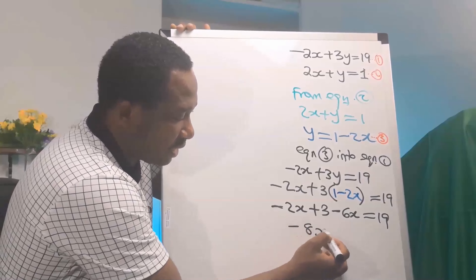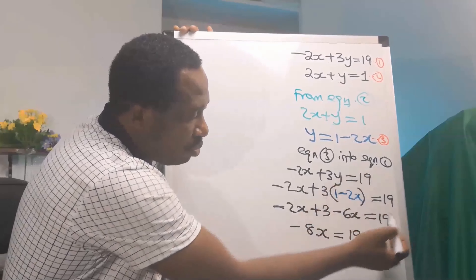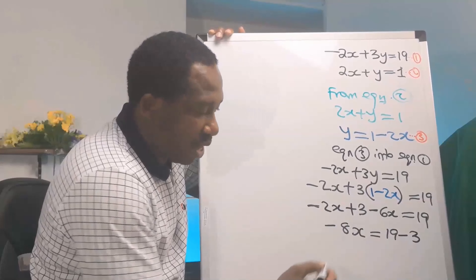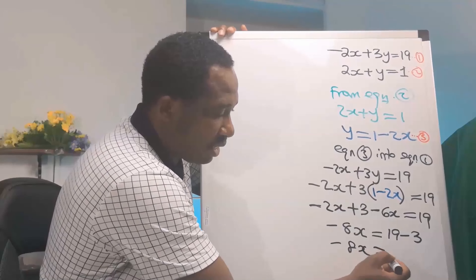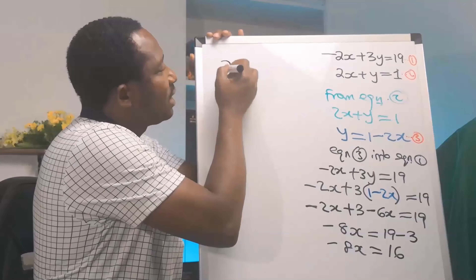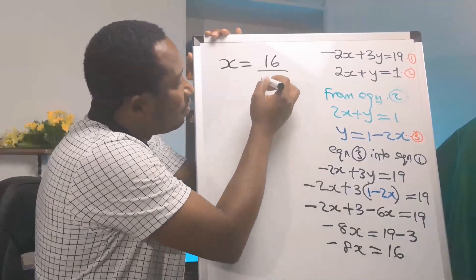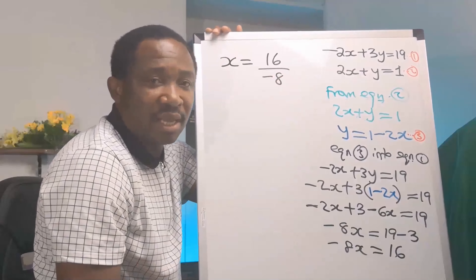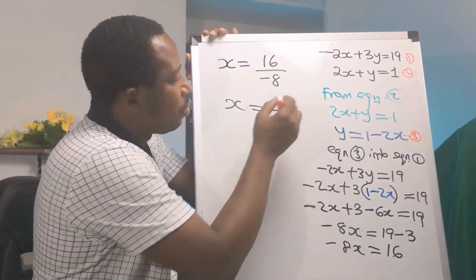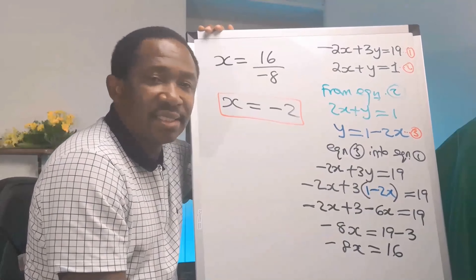So we have minus 2x minus 6x, which gives minus 8x, and on the right we have 19. Next, the 3 moves to the other side and becomes minus 3, giving minus 8x equals 16. We want to isolate x, so x equals 16 divided by minus 8, which gives x equals minus 2.